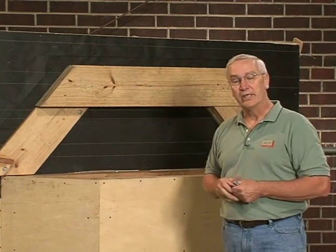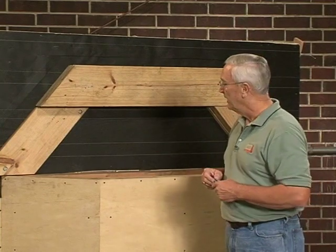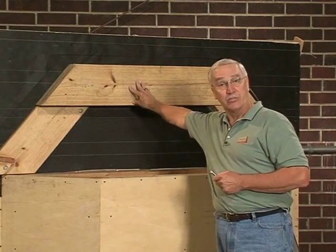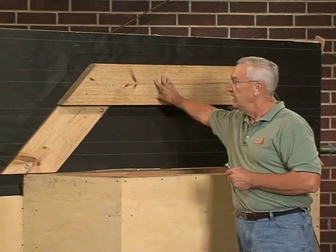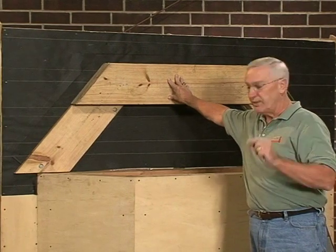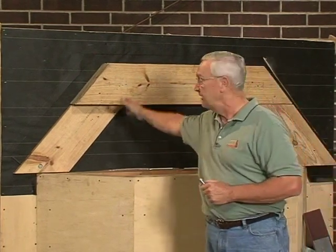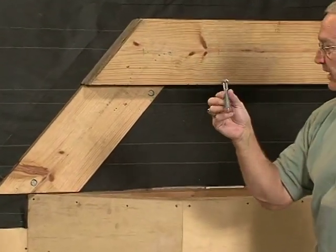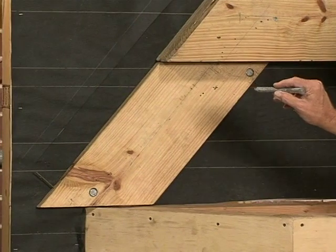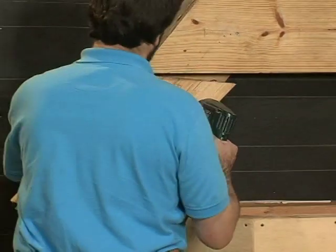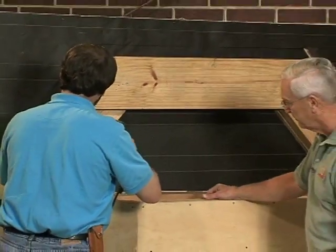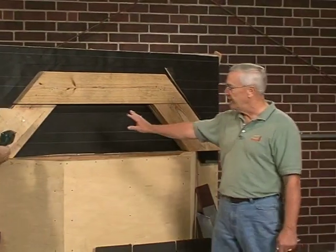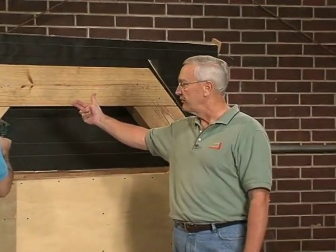It has to be properly supported, and the code says you can do that in two ways. What it calls for is three rafters, and the minimum size you can use is a 2x6. Three 2x6s will satisfy the code. One stipulation is the first one must be lagged to the vertical framing on 16-inch centers behind the bay with a lag bolt that's 5/8 by 5 inches long. The two pieces of framing closest to the front can be nailed on with 16-penny nails.